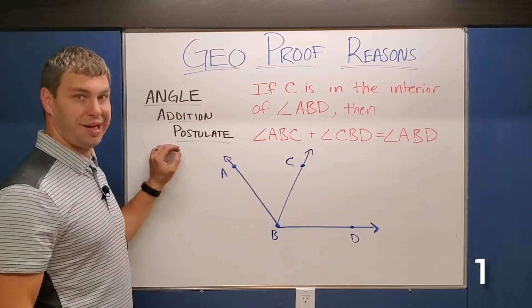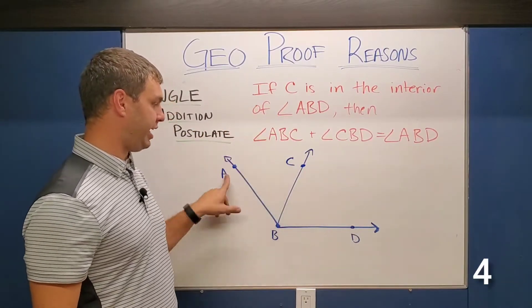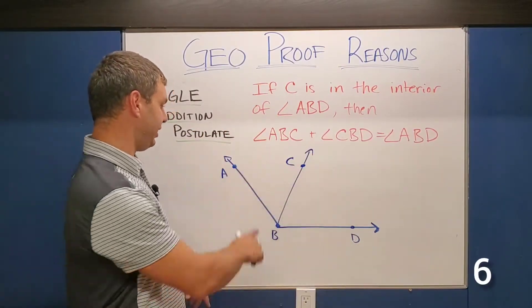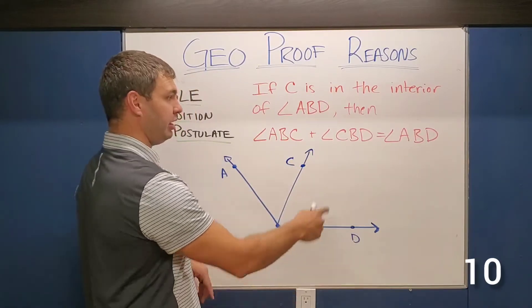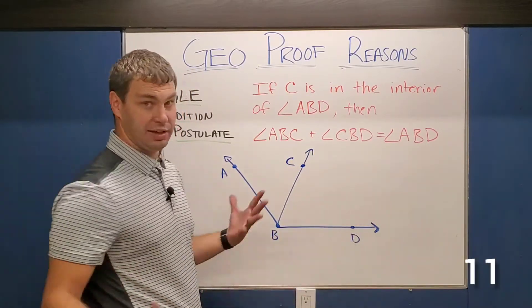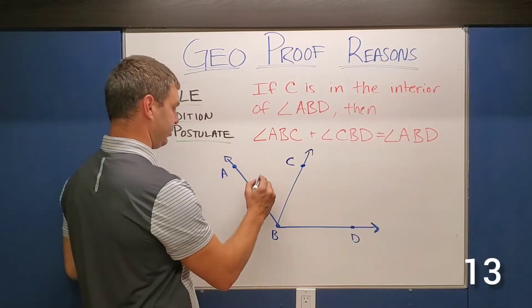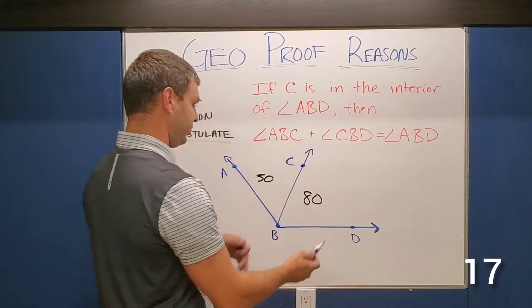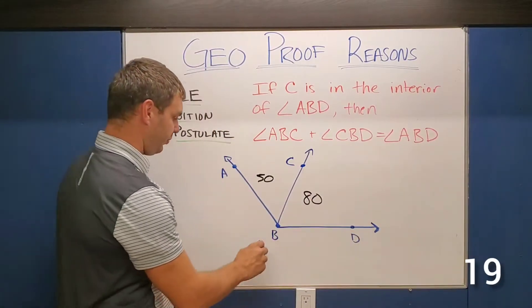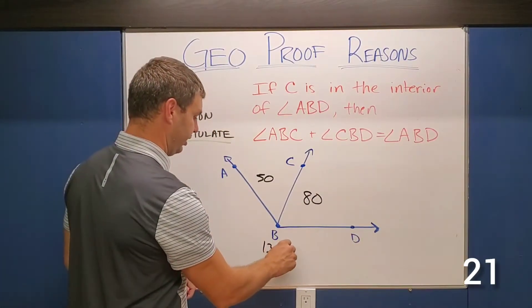Angle addition postulate. A quick definition says if C is in the interior of angle ABD, then ABC, this top angle, plus CBD, this right angle equals the entire thing ABD. In other words, if ABC, let's say this was 50 degrees and CBD, let's say this was 80 degrees. If I add those two together, it's going to give me an entire angle, which would be of course 130 degrees.